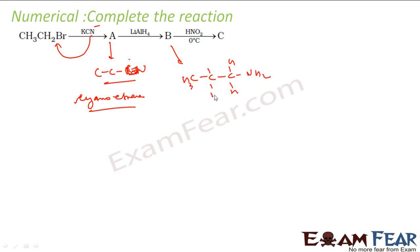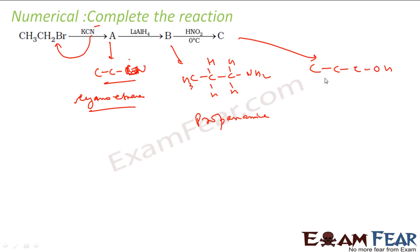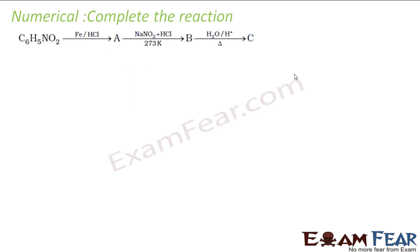What you will get is CH3CH2CH2NH2 — that is propanamine. Now when you heat this with HNO2 at 0 degrees Celsius, what you will get is the corresponding alcohol — that is propanol.